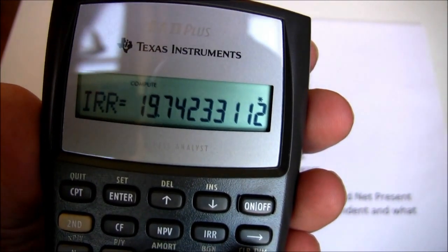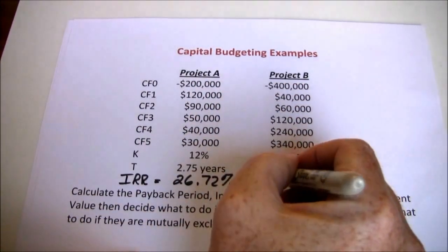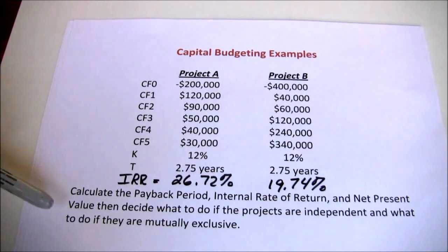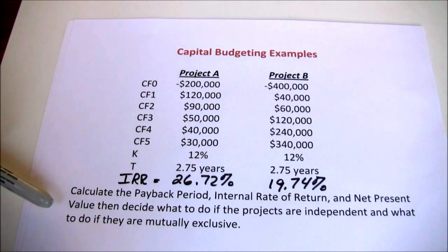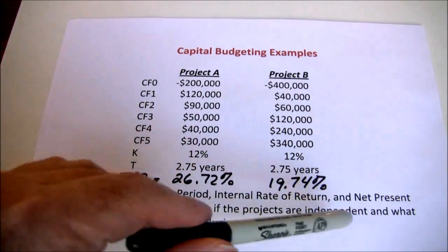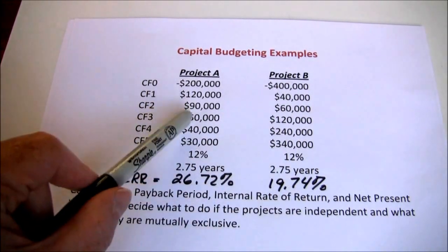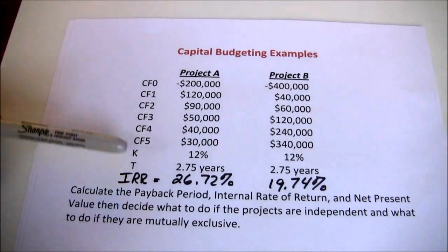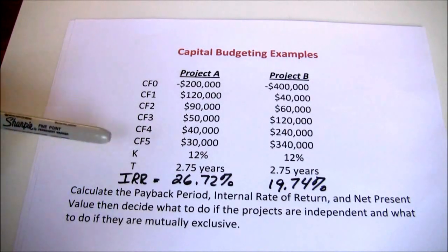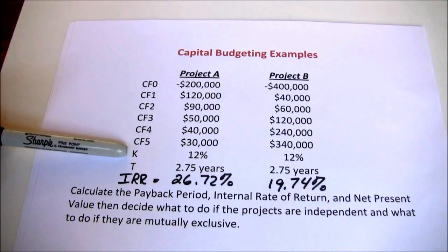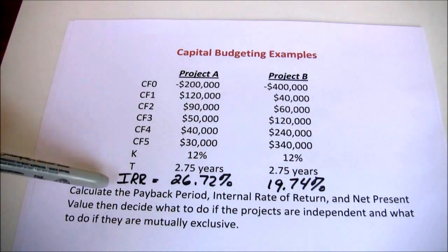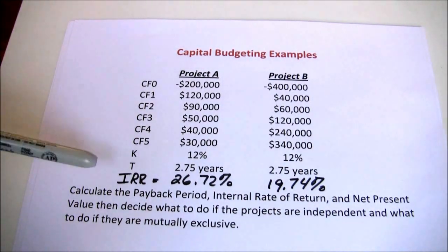And we get an internal rate of return of 19.74%. Now we've calculated these, so based entirely on internal rate of return — we'll come back and do the overall comparison later — based entirely on internal rate of return, what should we do? If the projects are independent, that means we can take both A and B, just A, just B, or neither one. In this case both projects have an expected rate of return greater than their required return, so if they're independent we want to take both projects — take both A and B.